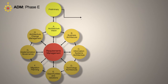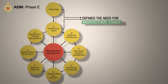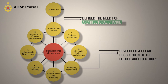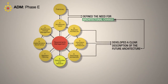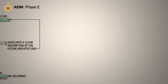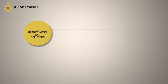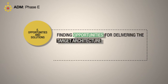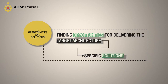The preliminary phase and architecture vision defined the need for architectural change. Phases B, C, and D developed a clear description of the future architecture that could enable that need. Phase E is where TOGAF first looks at how the vision and future architectures are delivered. Phase E is well named — it's about finding opportunities for delivering the target architecture by implementing specific solutions.